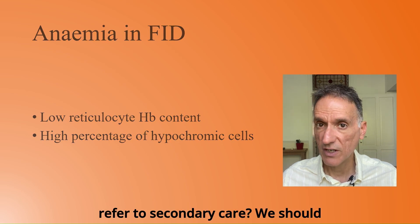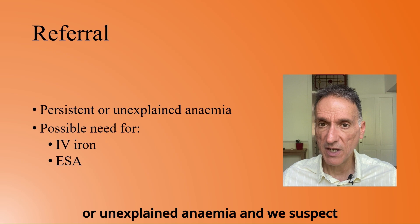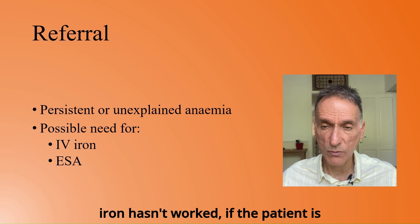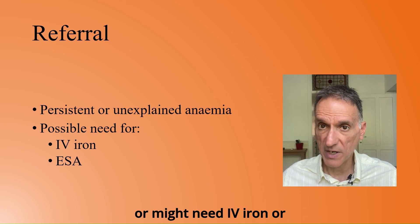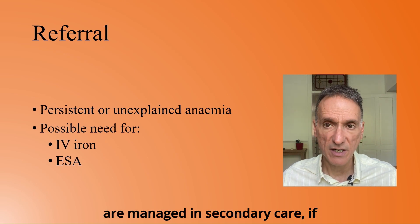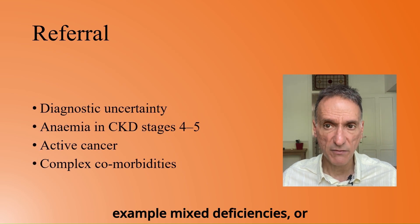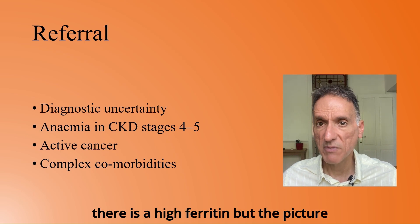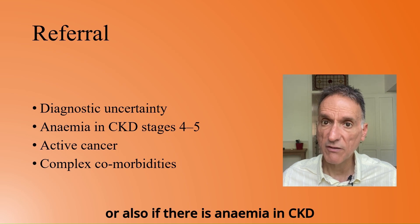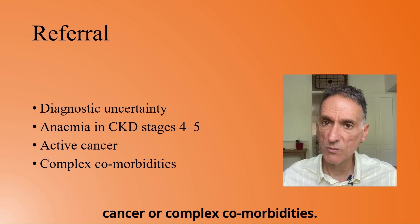When should we refer to secondary care? We should consider referral if there is persistent or unexplained anemia and we suspect functional iron deficiency because oral iron hasn't worked. If the patient is, or might need, IV iron or erythropoietin stimulating agents, which are managed in secondary care. If there is diagnostic uncertainty, like for example mixed deficiencies, or there is a high ferritin but the picture still points to iron deficiency anemia. Or also if there is anemia in CKD stages 4 or 5, active cancer, or complex comorbidities.